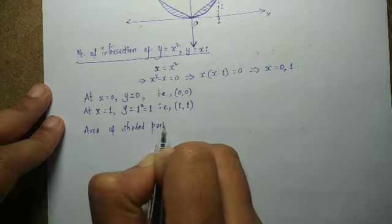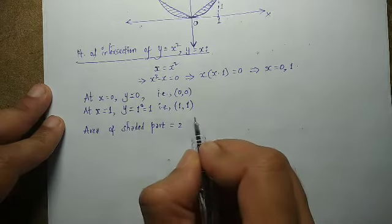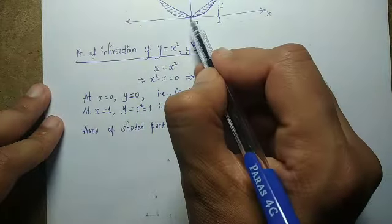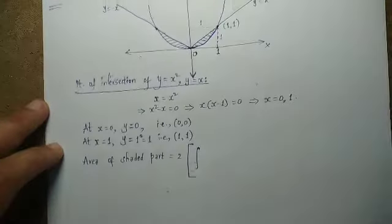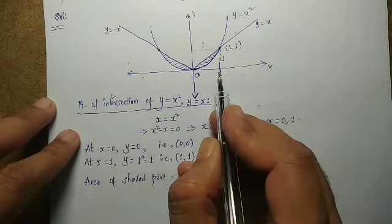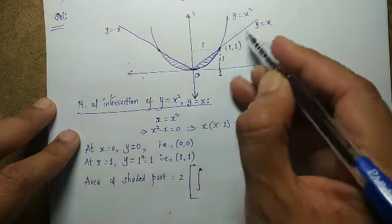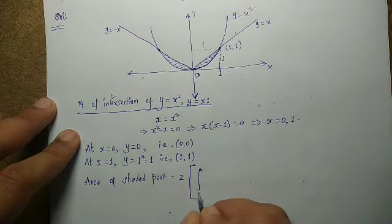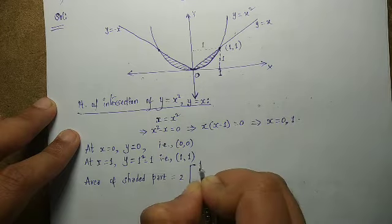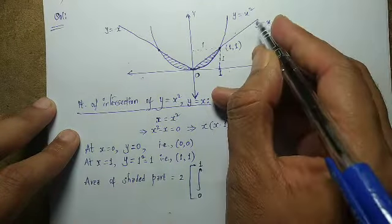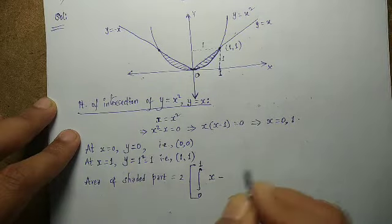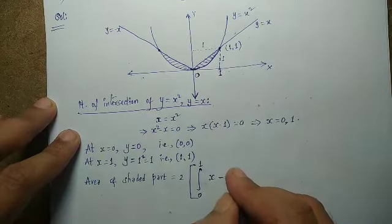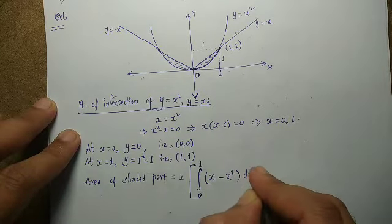By symmetry, the total shaded area is two times the first-quadrant area. Area of shaded part = 2 × ∫[0 to 1] (x − x²) dx.